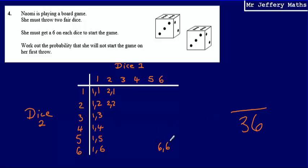If there is only one way that is going to start the game out of those 36, that means there are 35 combinations which means she will not start the game. So my answer here is going to be 35 over 36.